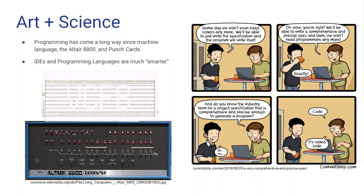Somebody has to tell the computers how to program themselves. And if you look at where we've come from — machine code, programming the Altair by flipping switches, or using punch cards — computers are pretty much programming themselves anymore. We're providing a very high-level description, a specification of what we want it to do, and it creates all this code for us. Especially with Delphi and C++ Builder, you're able to use components and work at a very high level, almost to a low-code degree. IDEs will continue to get smarter and make our jobs easier.